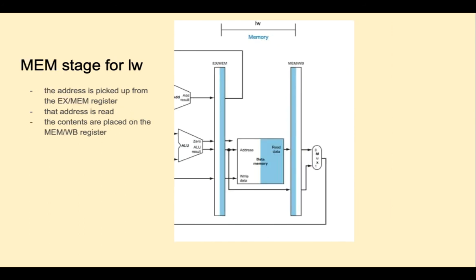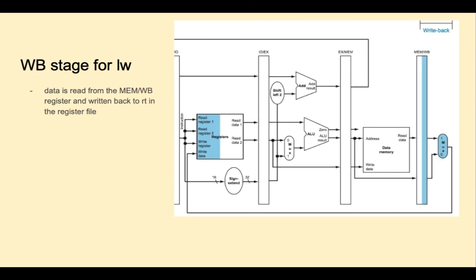In the MEM stage, the address is read from the EX MEM pipeline, the data is read from data memory, and stored out to the MEM WB pipeline register. Finally, in the writeback stage, the value loaded from memory is read from the pipeline register, goes through the multiplexer, and is written back to the register file.